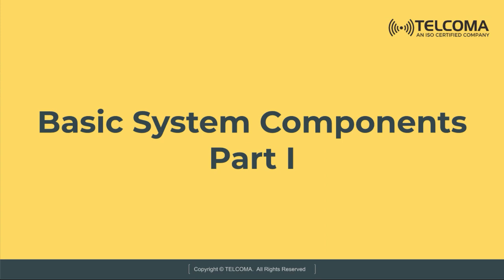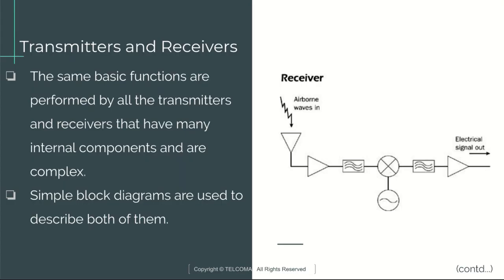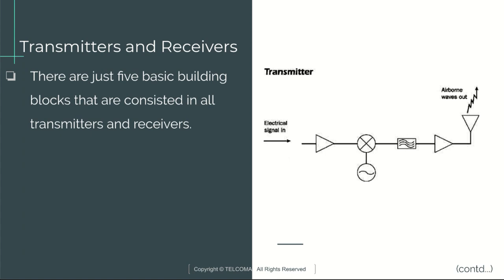The next lecture is Basic System Components Part One. We start with transmitters and receivers. The same basic functions are performed by all transmitters and receivers, which are complex and have many internal components. Block diagrams are used to describe both of them. There are just five basic building blocks that are consistent in all transmitters and receivers.